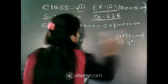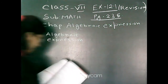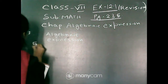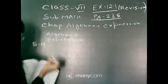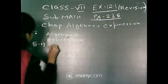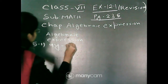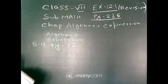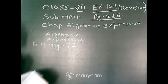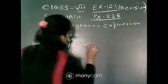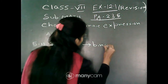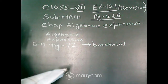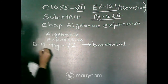Question 5.1. Here the given algebraic expression is 4y minus 7z. This algebraic expression contains 2 terms: 4y and minus 7z. So it is a binomial.